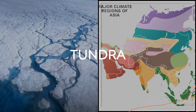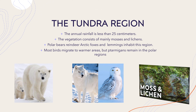The tundra is the name of the vast treeless land found in very cold regions. The northernmost part of Asia is known as the tundra region. It remains frozen for a major part of the year. The annual rainfall over here is less than 25 cm. Vegetation mainly consists of mosses and lichens. The wildlife over here consists of polar bears, reindeer, arctic fox and lemmings. Most of the birds over here migrate to warmer areas, but the ptarmigan remain in the polar regions.